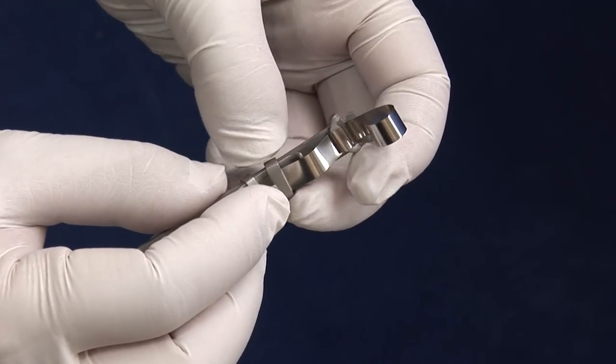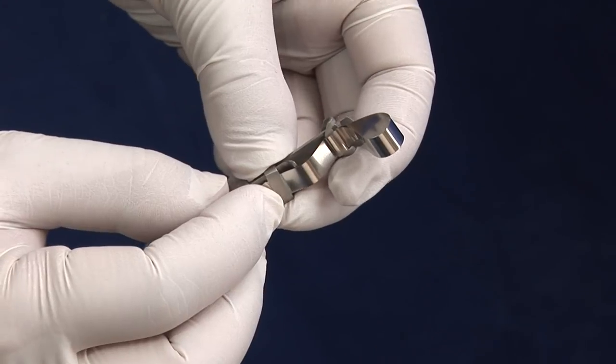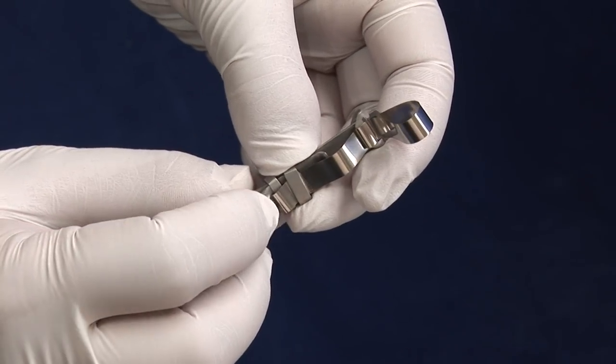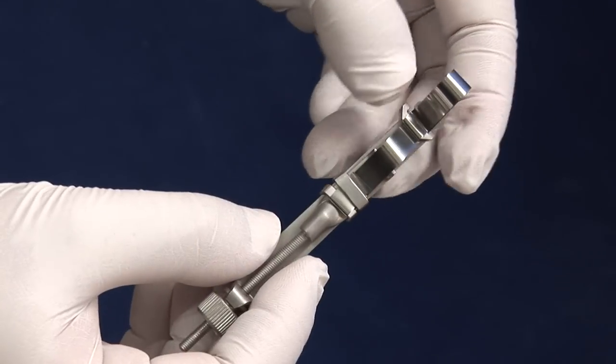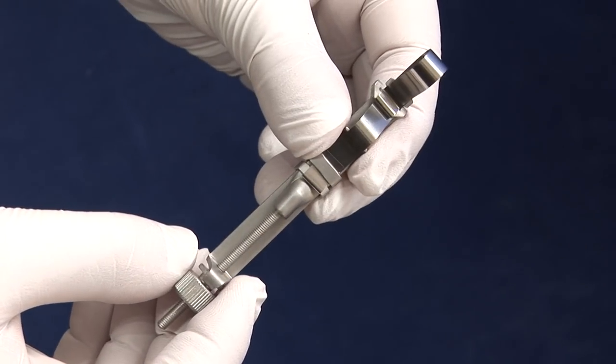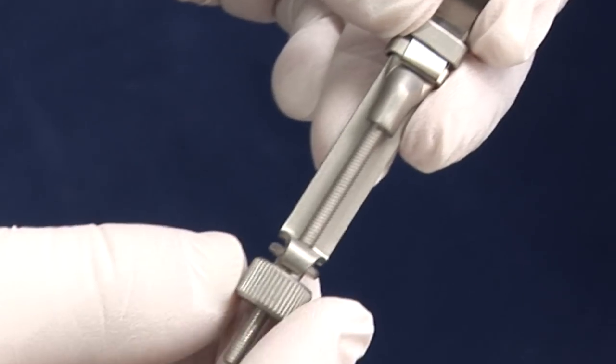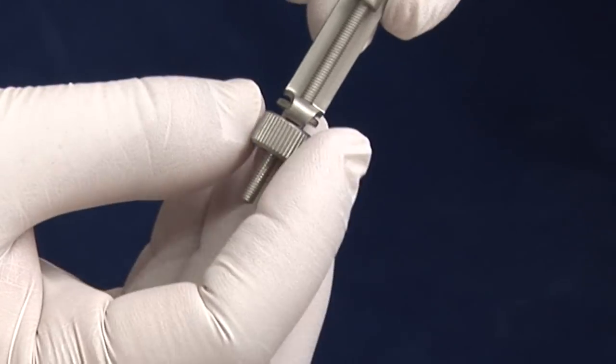Then bend the matrix band under and thread in between the locks. Press into place. This completes the preparation of the matrix band. Use the nut to adjust the size of the loop and make it smaller.